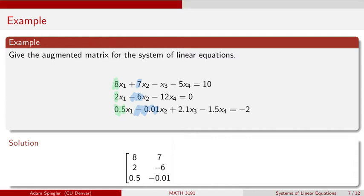The next column would correspond to the coefficients for x3. Here's where we want to be careful. We have a minus 1, and over here, this minus 12 corresponds to the x4 term, not the x3 term.